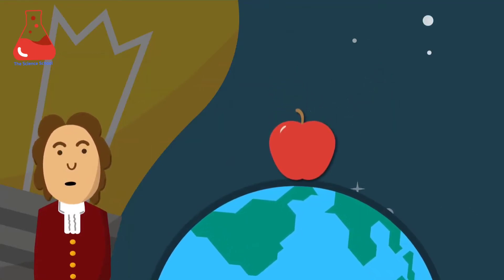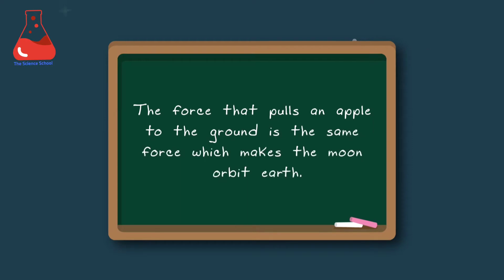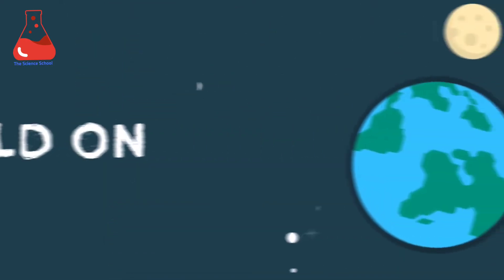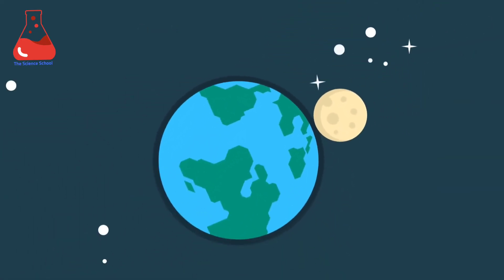Which translates to: the force that pulls an apple to the ground is the same force which makes the moon orbit Earth. But hold on, that would mean that the moon will eventually crash into Earth, right? But it won't.